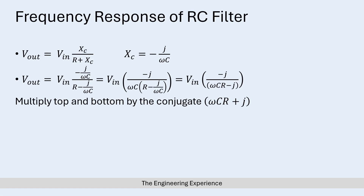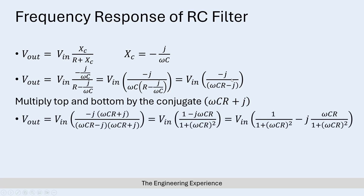Now if we multiply the top and bottom by the complex conjugate — which is omega CR plus J — we end up with a new expression. Multiplying everything out and doing the cancellations, we end up with the equation separated into real and imaginary parts. So V_out equals V_in multiplied by 1 over (1 plus (omega CR)²) minus J times omega CR over (1 plus (omega CR)²).